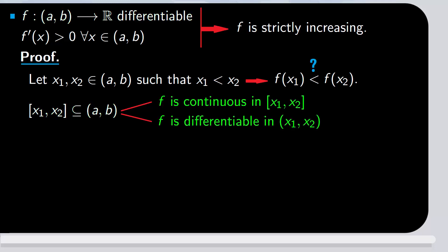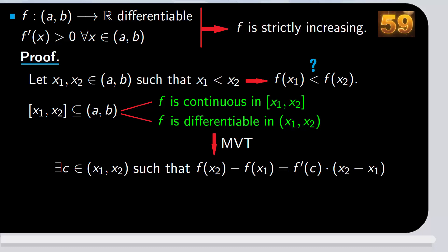So f satisfies the conditions of the mean value theorem in the interval [x₁, x₂]. This theorem asserts the existence of a c in the open interval (x₁, x₂) such that f(x₂) - f(x₁) = f'(c) · (x₂ - x₁).